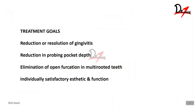So what are the goals of treatment? At the end of treatment what we want to achieve is the reduction or resolution of gingivitis. If we have a case of chronic gingivitis we expect reduction and resolution of the condition. Then we would expect reduction in the probing pocket depth — initially before therapy if the probing pocket depth is 7 mm, we expect it to reduce to say 4 or 5 mm.